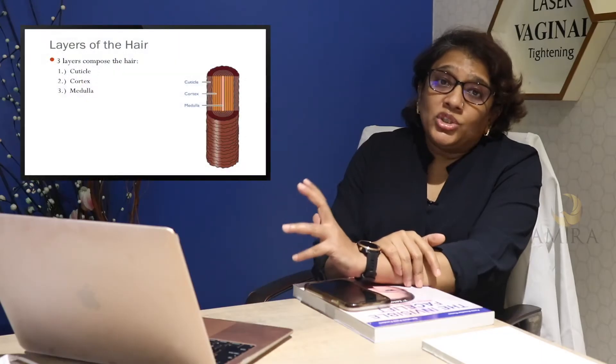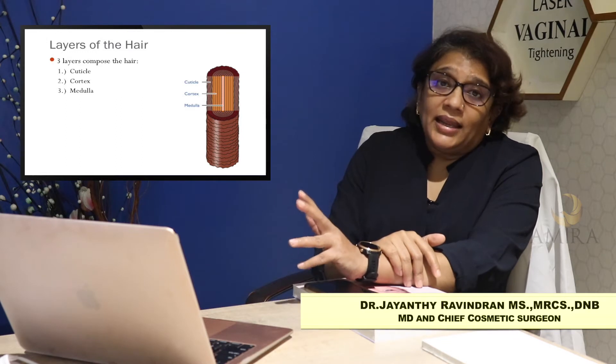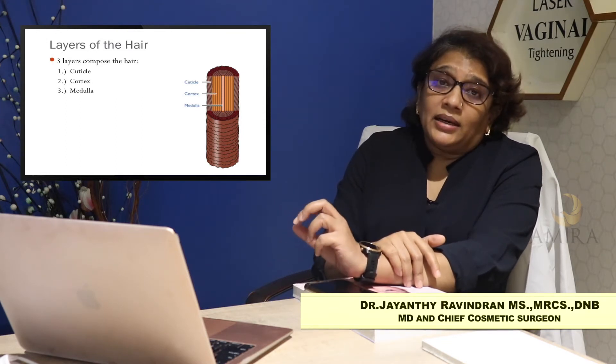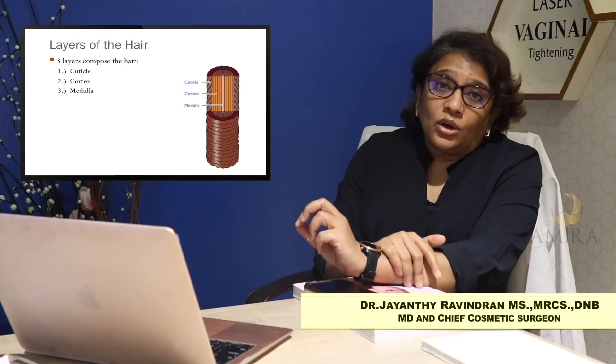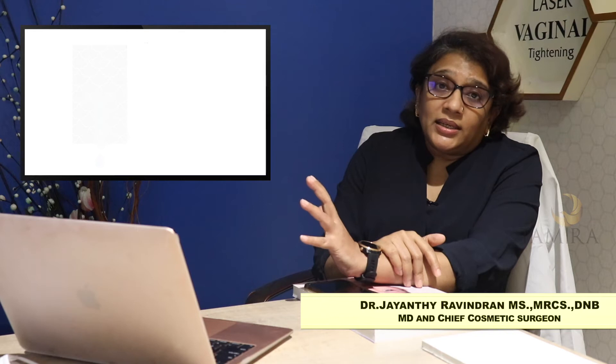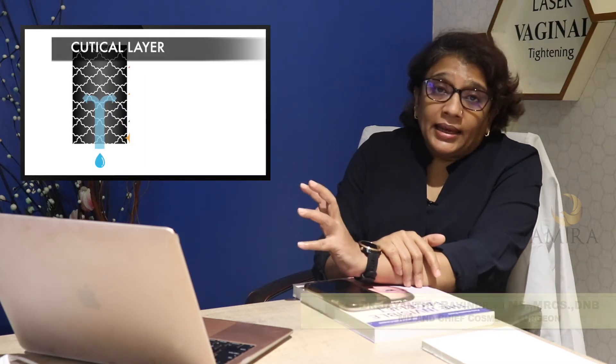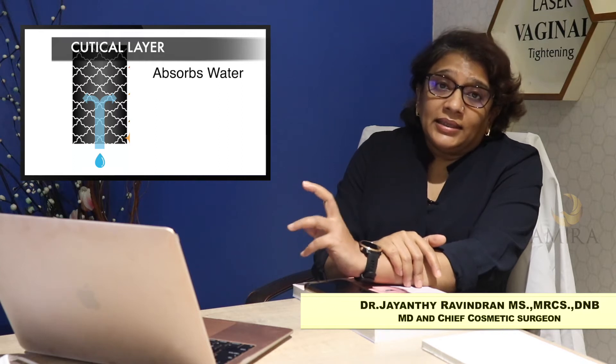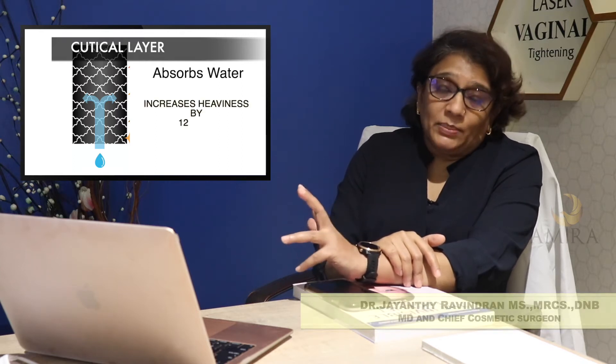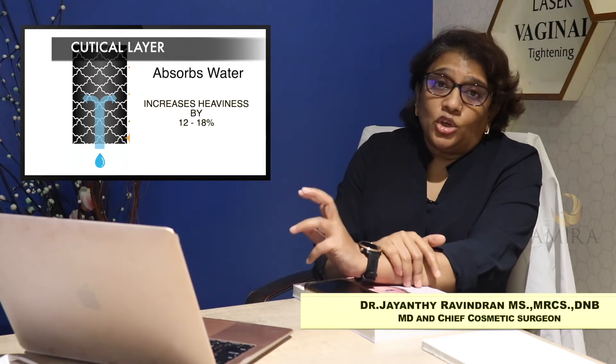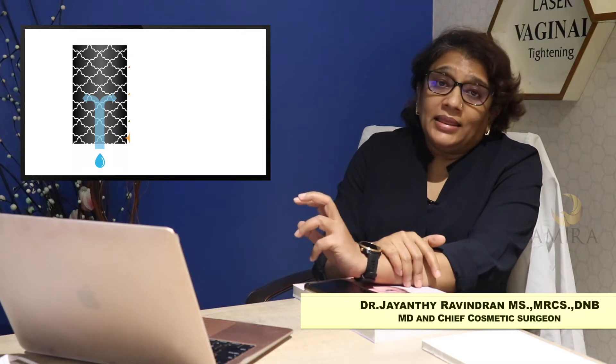Hair has an outer layer called the cuticle and an inner layer called the cortex. Human hair can also have a core called the medulla. The cuticle is porous and can absorb water, increasing the heaviness of the hair by 12 to 18%. The inner structure, the cortex, is the most important and contains keratin and melanin pigments. These keratin cells are arranged longitudinally and are bound to each other by sulfur bonds which also contain cysteine residues.